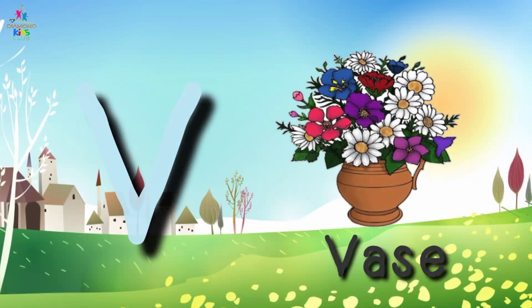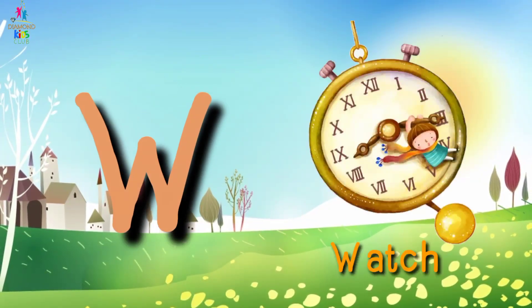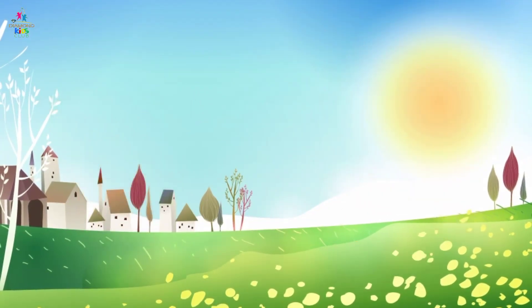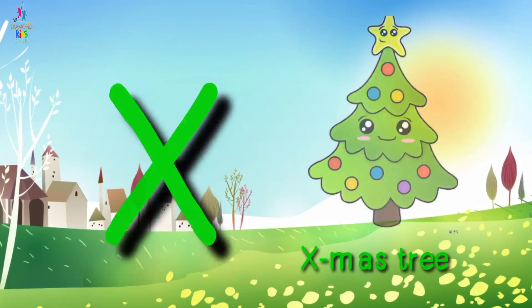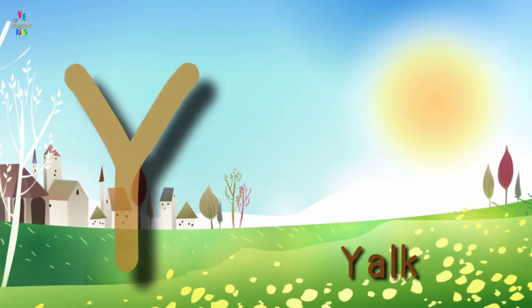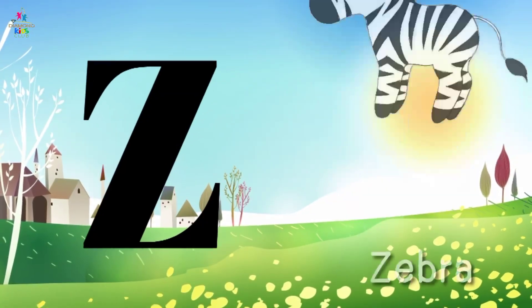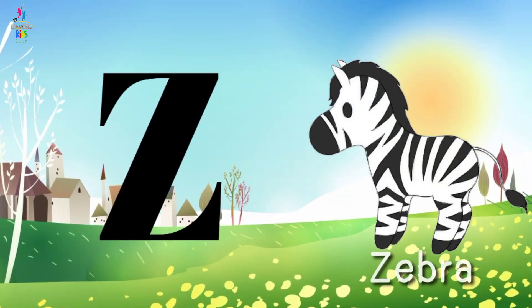V for vase, W for watch, X for accessory, Y for yarn, Z for zebra.